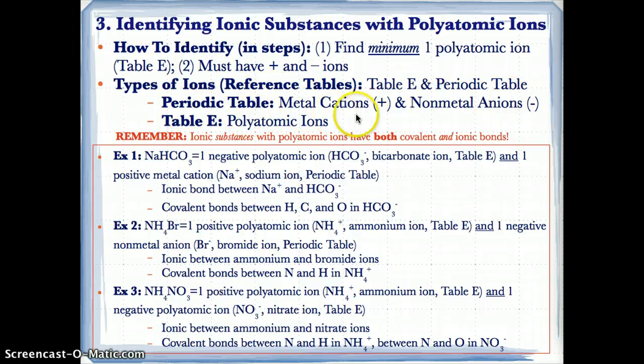Table E lists polyatomic ions like ammonium NH4 plus, carbonate CO3 2 minus, and others. Ionic substances with polyatomic ions have both covalent and ionic bonds. To identify whether an ionic substance has polyatomic ions, you must first find one polyatomic ion listed on Table E in the formula, and also establish that there are positive and negative ions present.